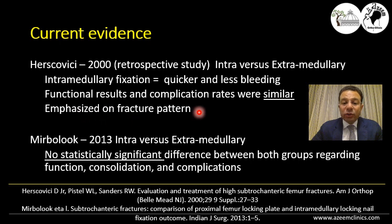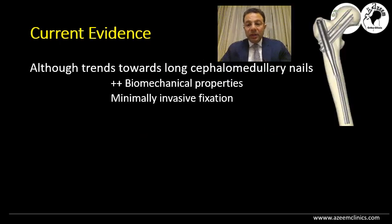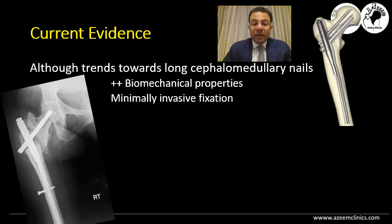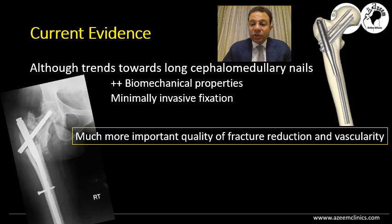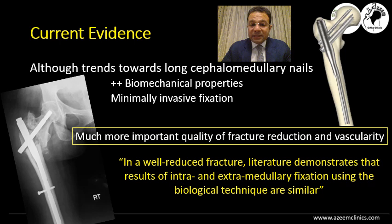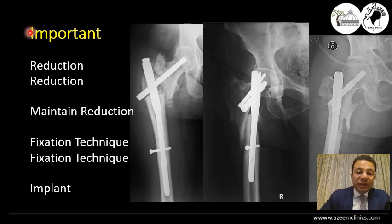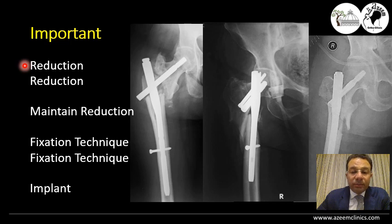Most papers emphasized that it is about the fracture pattern or the reduction. Although current trends favor long cephalomedullary nails because of their biomechanical advantages and minimally invasive fixation, they also fail. The much more important factors are the quality of reduction and the vascularity — both mechanical and biological factors. In a well-reduced fracture preserving biological techniques, the literature demonstrates that results of intramedullary and extramedullary fixation were similar. So it's not a matter of implant — it's a matter of reduction.